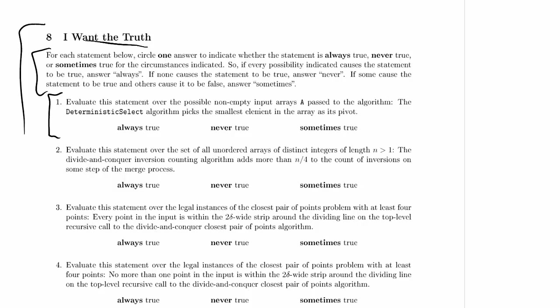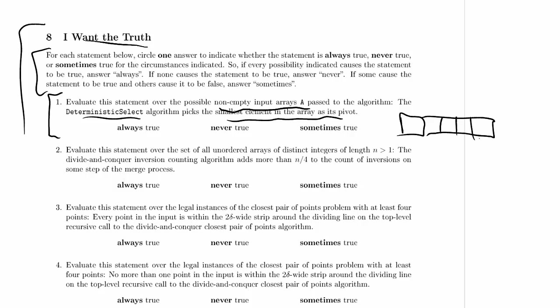Evaluate this statement over the possible non-empty input arrays A passed to the algorithm: the deterministic select algorithm picks the smallest element in the array as its pivot. If we're dealing with non-empty arrays, we might start thinking about the smallest possible non-empty array. But deterministic select has a base case of at least five elements. With four or fewer elements, we just sort with something like merge sort, so this is all irrelevant — it won't even pick a pivot until it has a sufficiently large array.